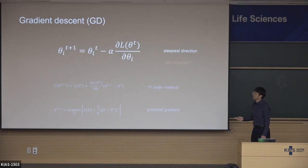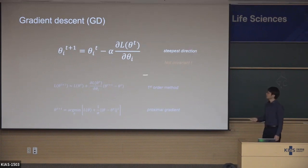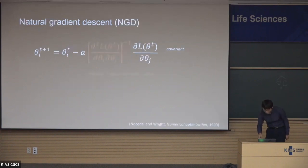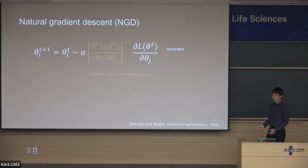But this gradient descent has a serious problem: this equation is not covariant. That means if you change your parameters theta to a reparametrization, this term doubles and this doubles. However, the gradient term compensates. In that sense, this equation is not covariant. To make this gradient descent equation covariant, people proposed another gradient descent.